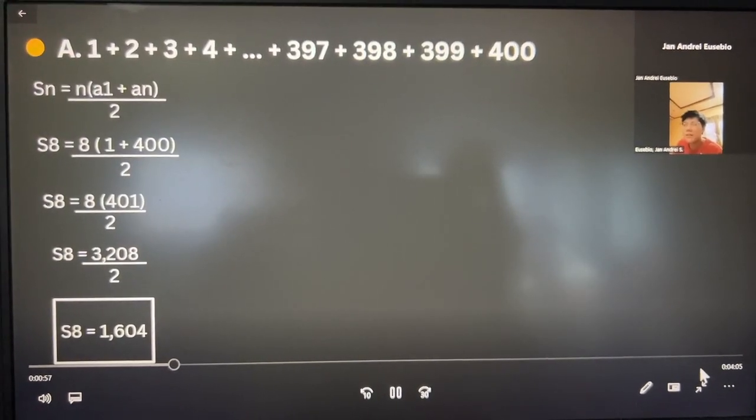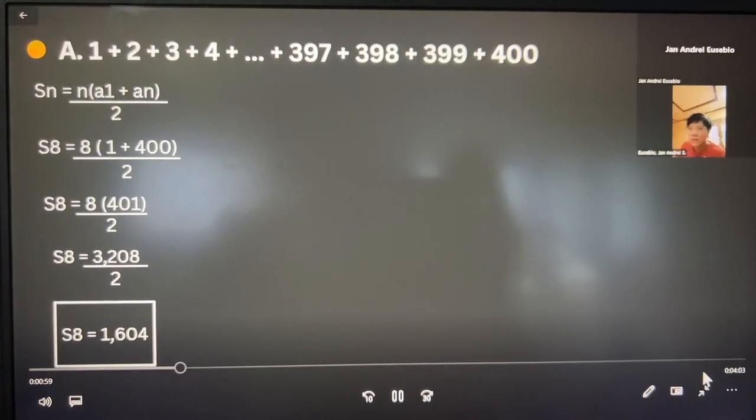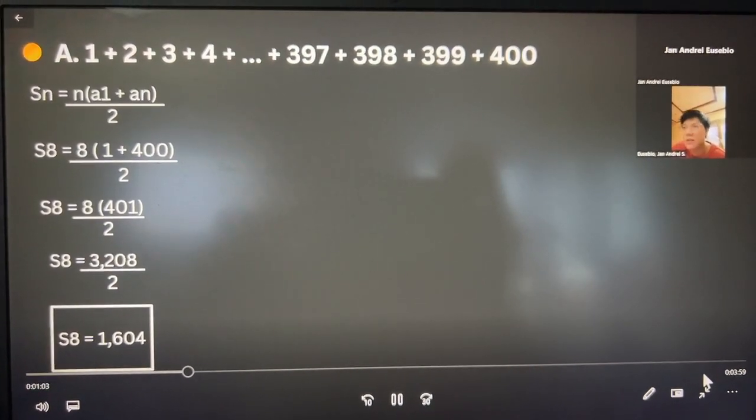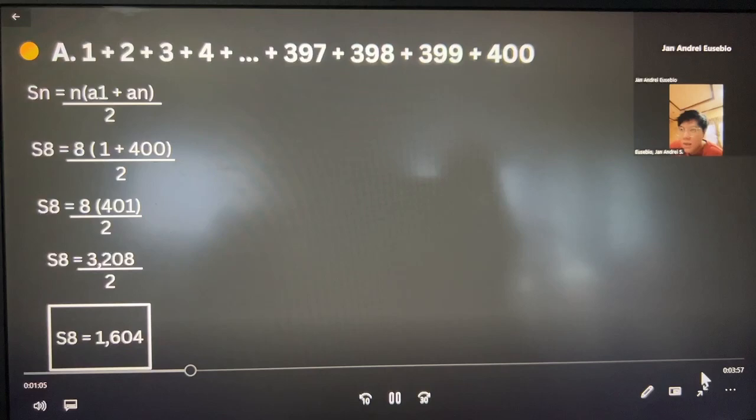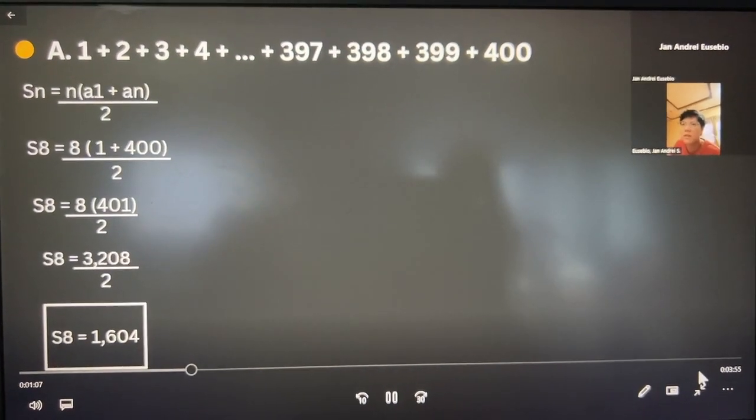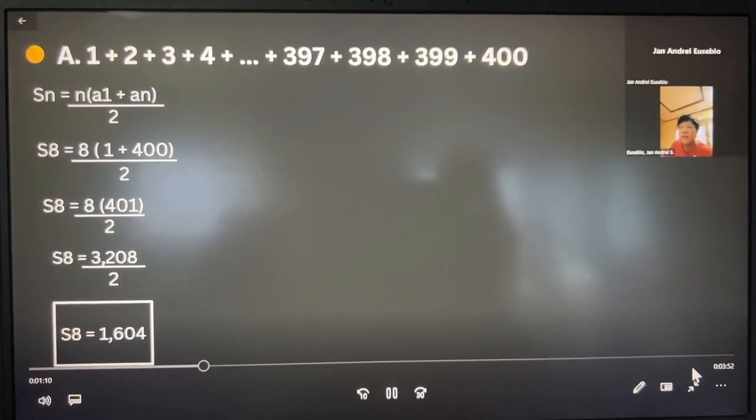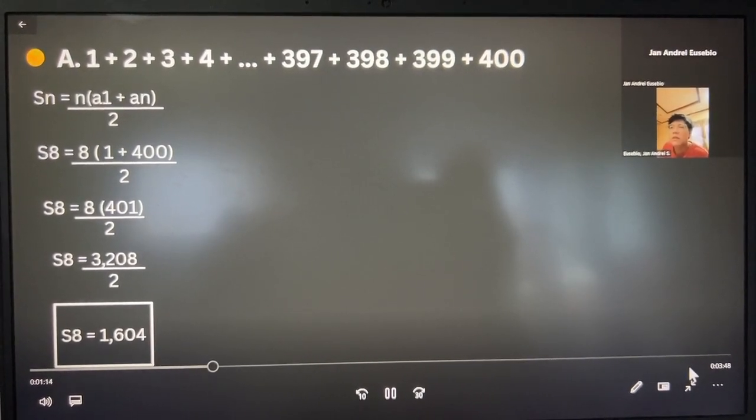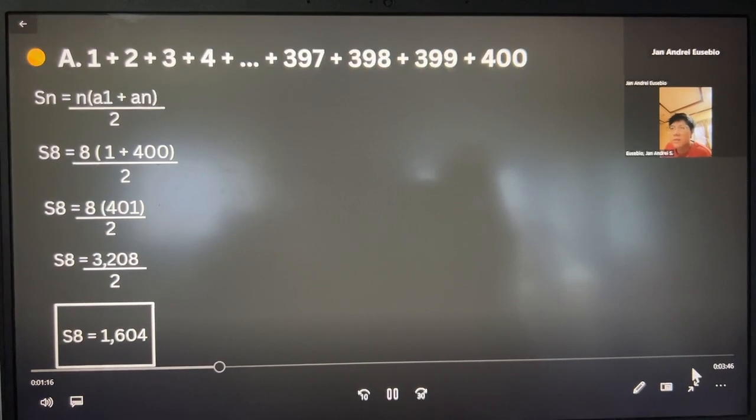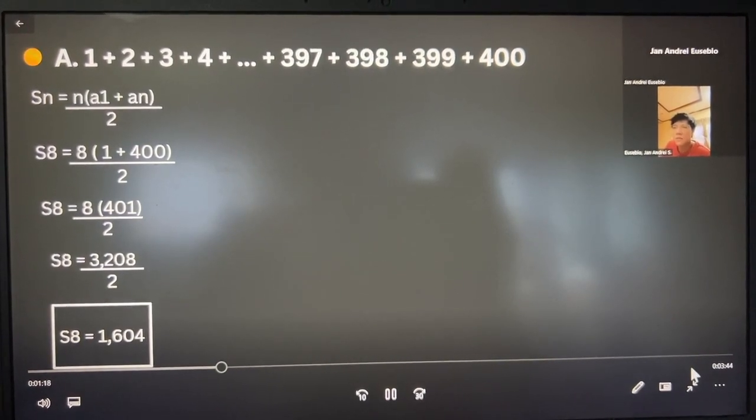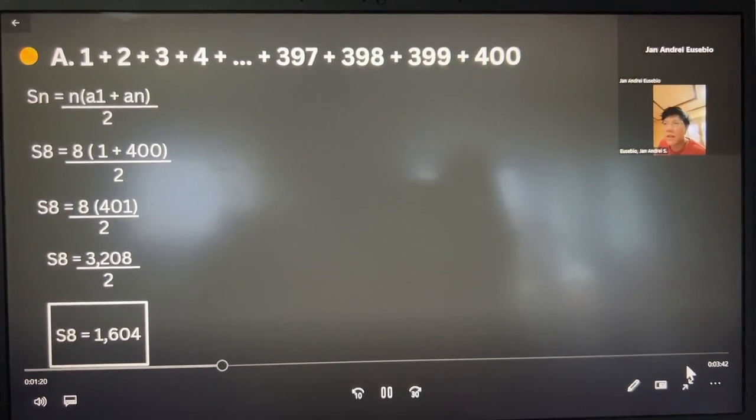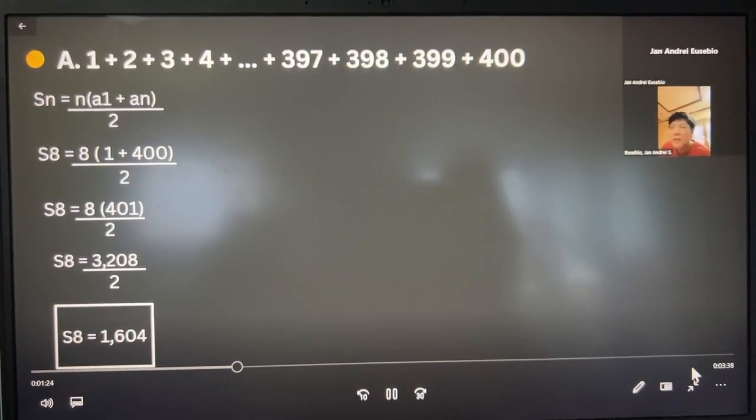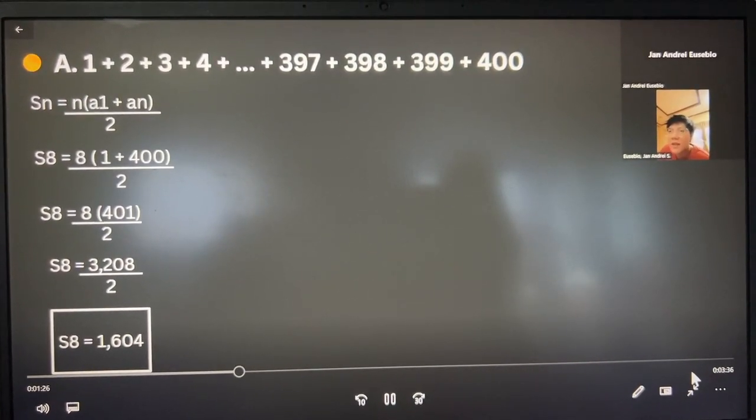So for letter A, this is the given order of numbers. So this is the formula: S sub N is equals to N in parenthesis bracket, A sub 1 plus A sub N, over 2. So this is what we're going to use. S sub N...